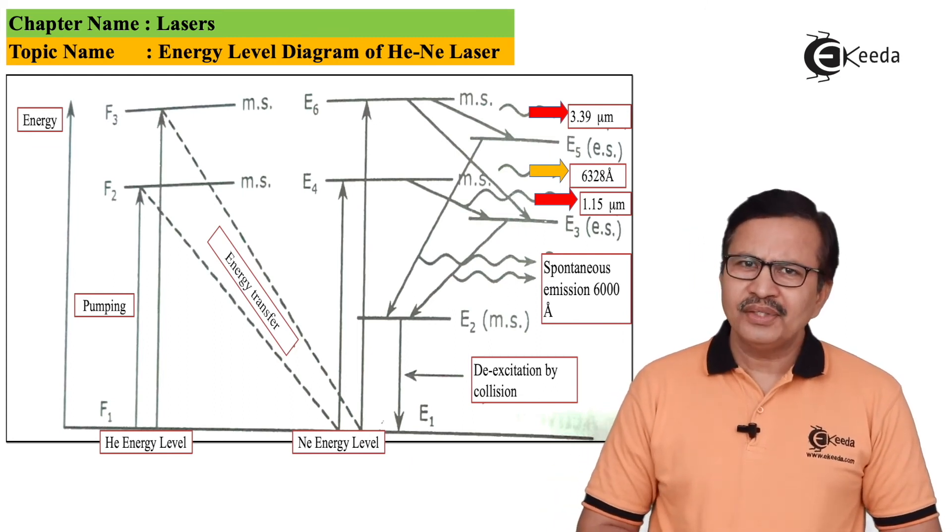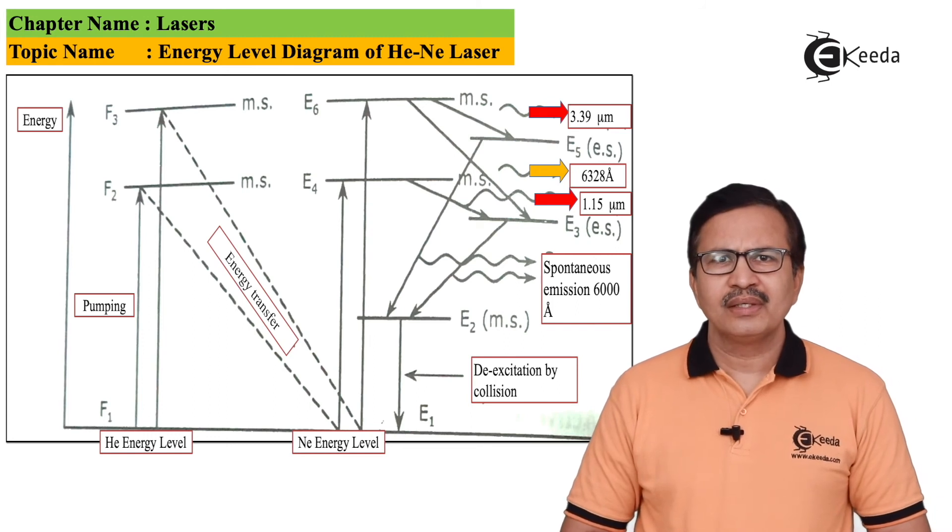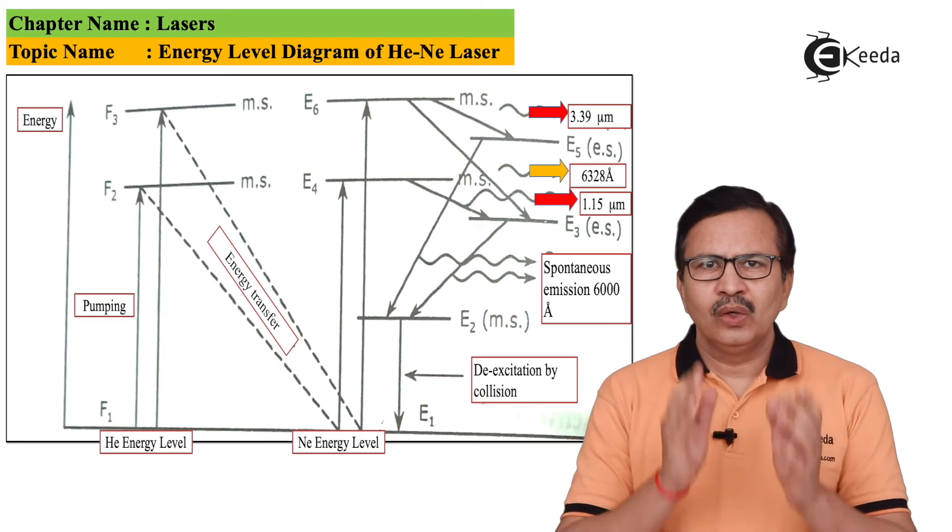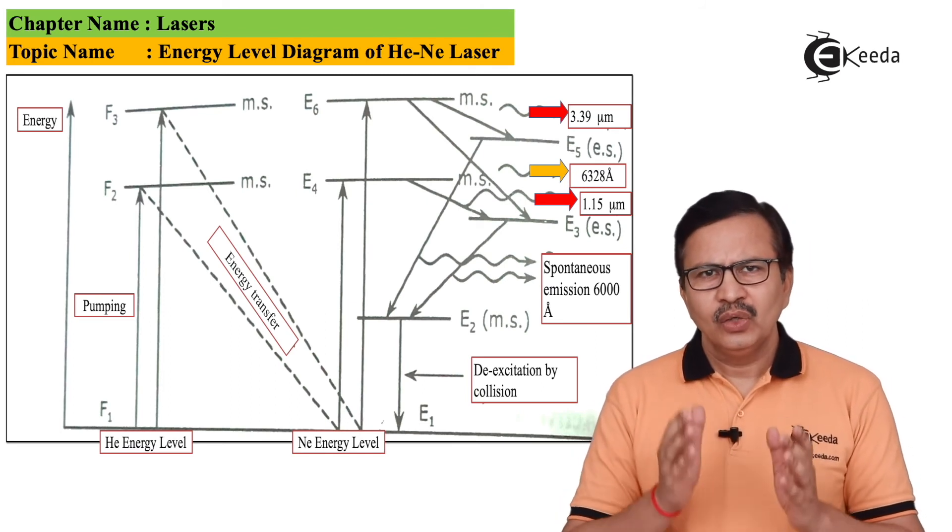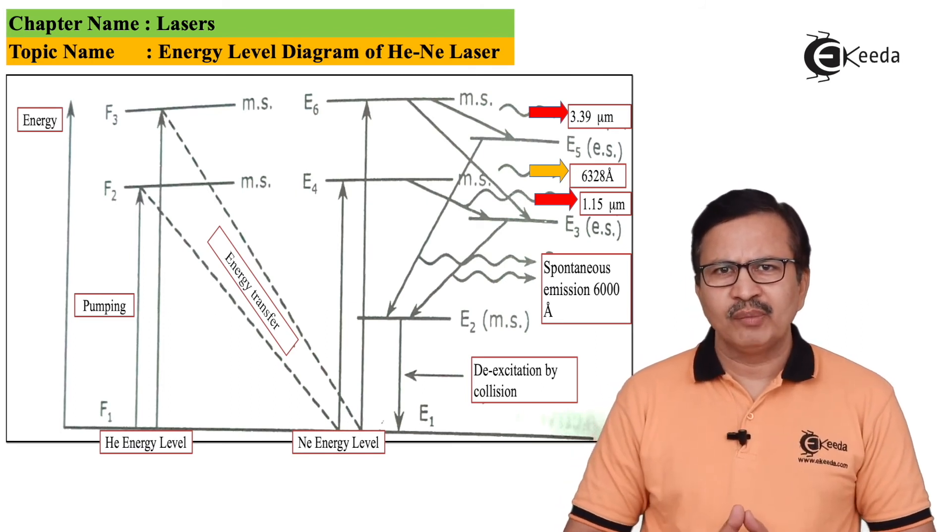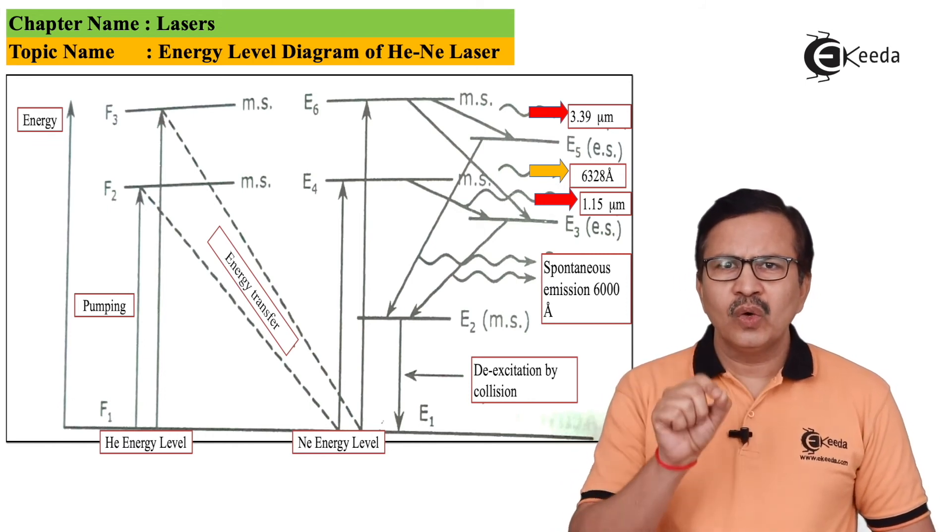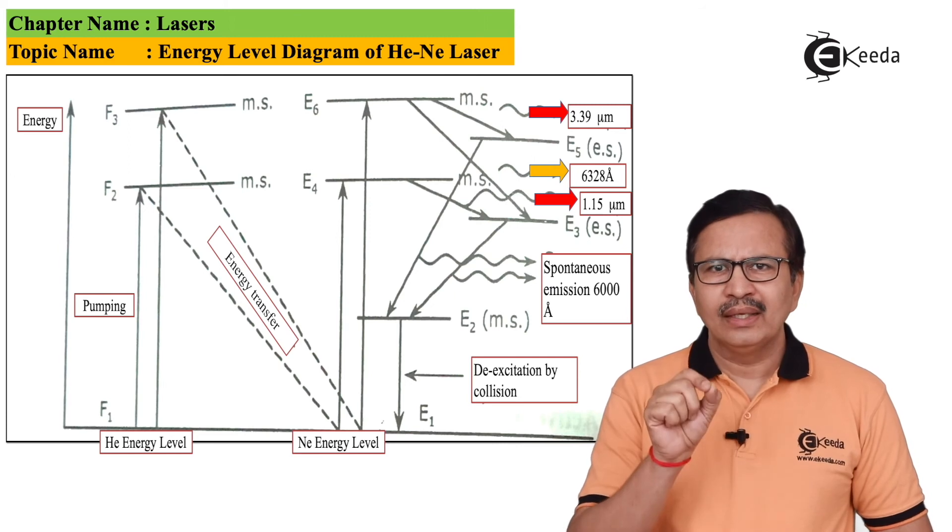The intensity of the helium neon laser ranges from 1 milliwatt to around 50 milliwatt. Although the intensity ranges only from 1 to 50 milliwatt, it is a very high power laser due to the coherent monochromatic radiation.